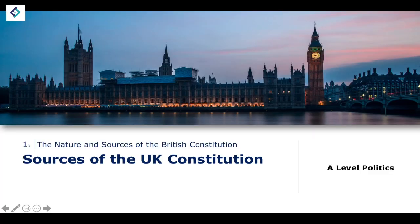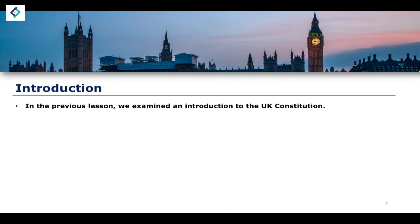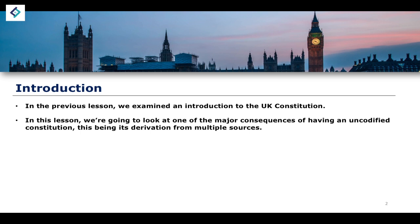In the previous lesson, what we did was introduce the nature of the UK Constitution, as well as outline the distinction that is made between a codified and an uncodified Constitution before looking at the various strengths and weaknesses of both. Now, in this lesson, what we're going to do is talk about the sources of the UK Constitution. When we think about the sources of the UK Constitution, we can think about it as a major consequence of having an uncodified Constitution.